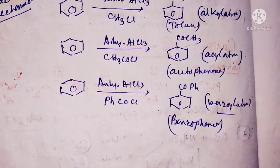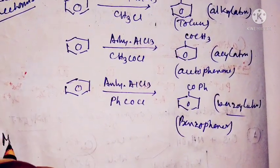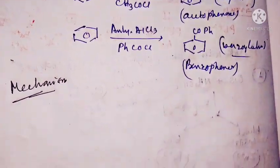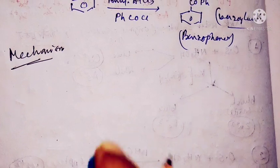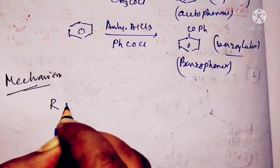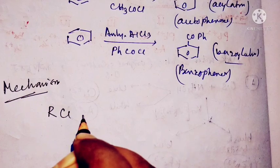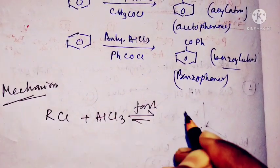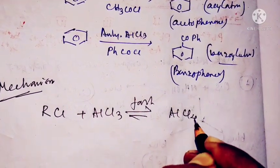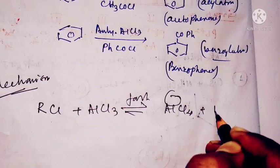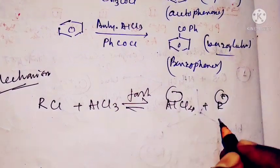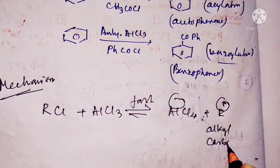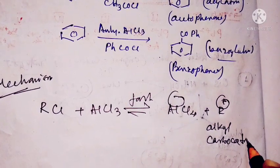Let's look at the mechanism. If RCl reacts in presence of anhydrous aluminum chloride, this is the first reaction. It will produce AlCl4 minus and R plus — the alkyl carbocation.